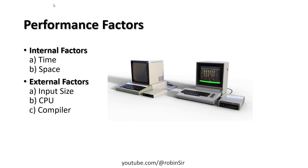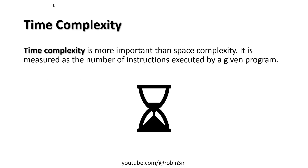Both internal and external factors matter, but internal factors are considered more important, and of time and space, time is considered the most important. Time complexity is measured as the number of instructions executed by a program. When we hear 'time complexity' it might sound like seconds or milliseconds, but it actually means the number of steps taken. If a program takes 7 steps to solve a problem, that is its time complexity.